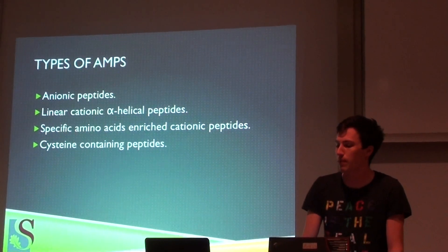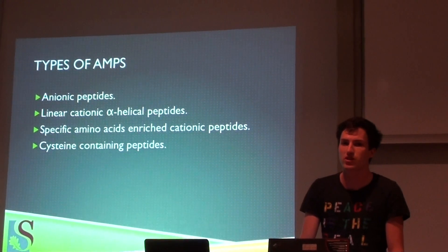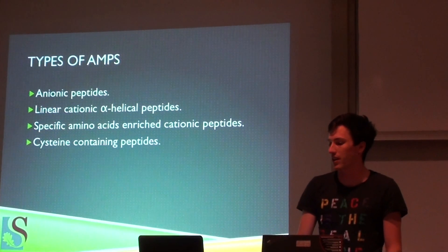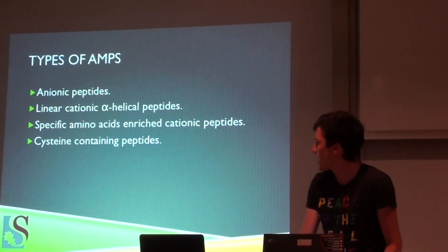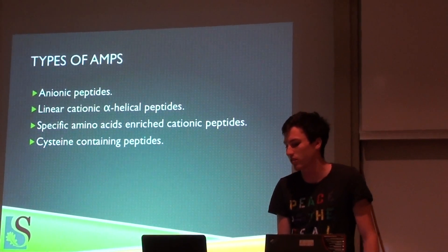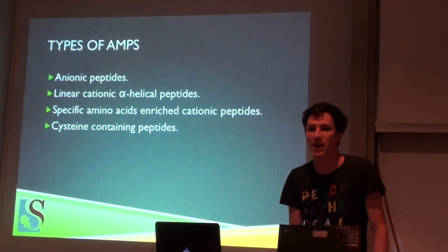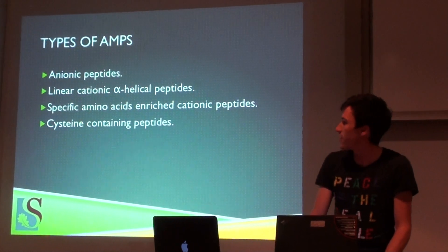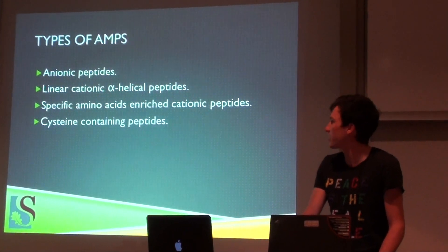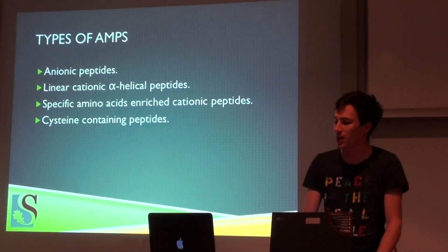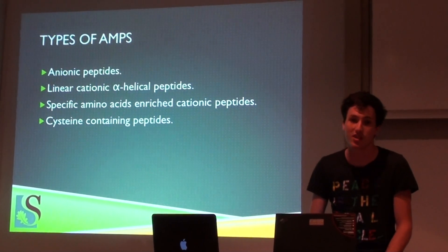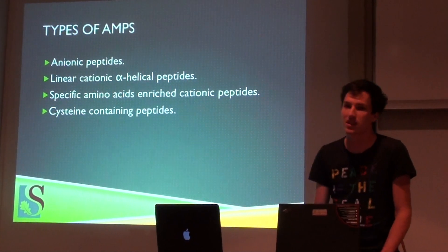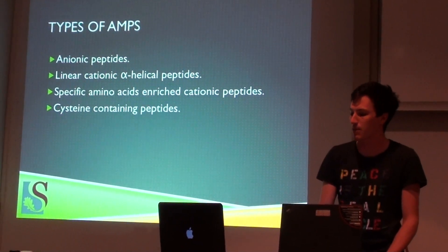You get four types of AMPs. You get anionic peptides, which are characteristic in that they contain rich in glutamic and aspartic acids. An example is dermocidin, which is found in humans, secreted in the skin and acts by destroying pathogens before they enter the body. Then you have linear cationic alpha helical peptides, which characteristically do not contain cysteine residues. An example of these is cecropin, which is found in insects and acts as a whole-body antibacterial.